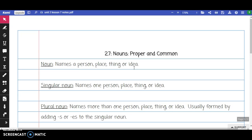There are several types of nouns. The first type of noun that we're going to discuss is a singular noun. A singular noun names one person, place, thing, or idea.